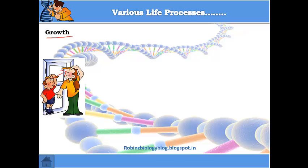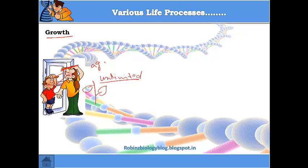Growth is an irreversible change that happens in a living organism — once you've grown from one height to a taller one, there's no going back. In humans, growth is limited. In plants, growth is unlimited because plants keep growing throughout their life. In contrast, once animals attain maturity their growth stops and aging sets in.